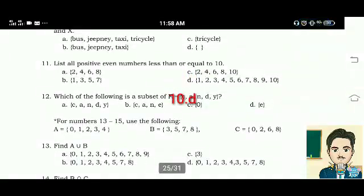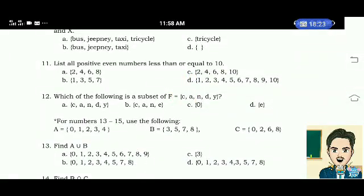List all positive even numbers less than or equal to 10. A. 2, 4, 6, 8 B. 1, 3, 5, 7 C. 2, 4, 6, 8, 10 D. 1, 2, 3, 4, 5, 6, 7, 8, 9, 10. The correct answer is letter A. 2, 4, 6, and 8.